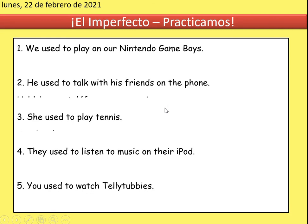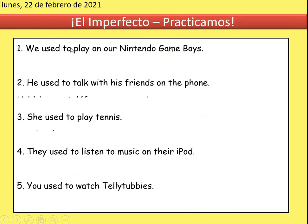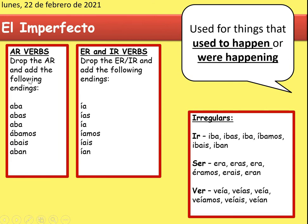Now practice using the imperfect tense. For example: 'We used to play on Nintendo Game Boys when we were younger' or 'He used to talk with his friends on the phone.' You do not need to translate the word 'used' on its own — that's a mistake lots of people make. 'Used to' is part of the verb. 'Jugar' with the AR ending is to play — J-U-G-A-R. Drop the AR and 'we used to play' becomes 'jugábamos'. 'You used to play' is 'jugabas'.